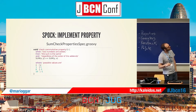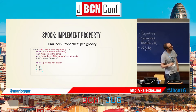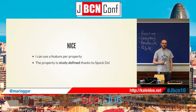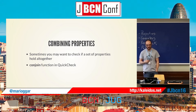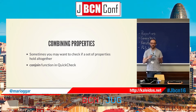This is one of the features of Spock — we are using what is called a data table. It helps me to feed data to the data variables inside. For prototyping a property this is very nice: the first time I check the property I'm using one for x and one for y. I can use a feature per property and the property is nicely defined by the Spock DSL. But what if properties must hold together?